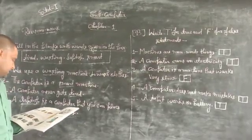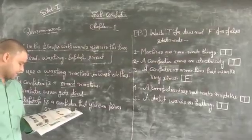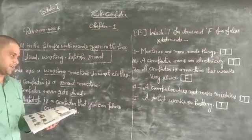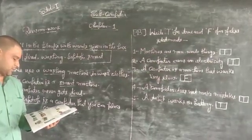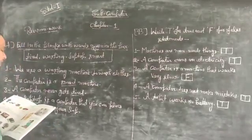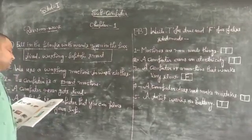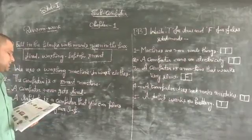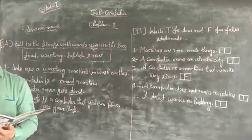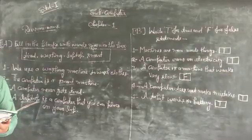We will now learn how some machines work for us. A washing machine is a machine that runs on electricity.